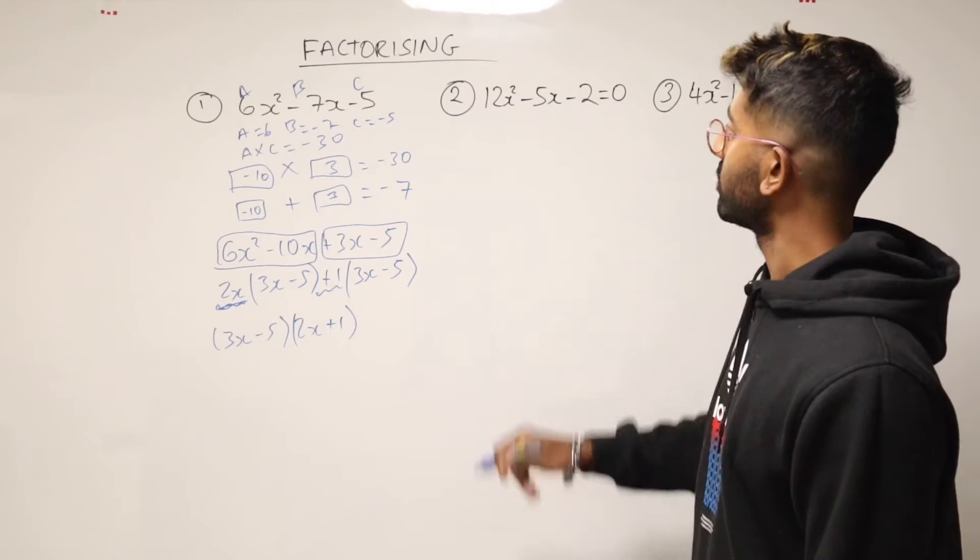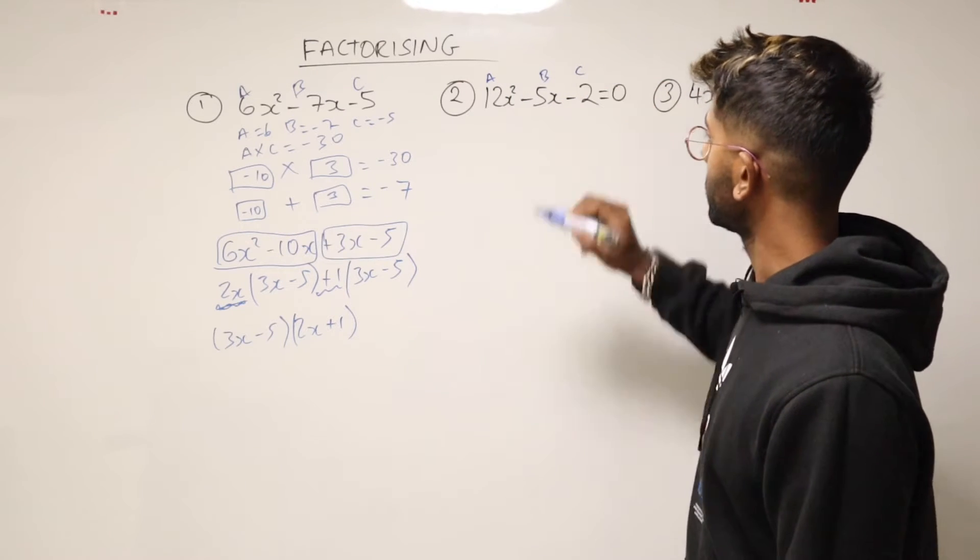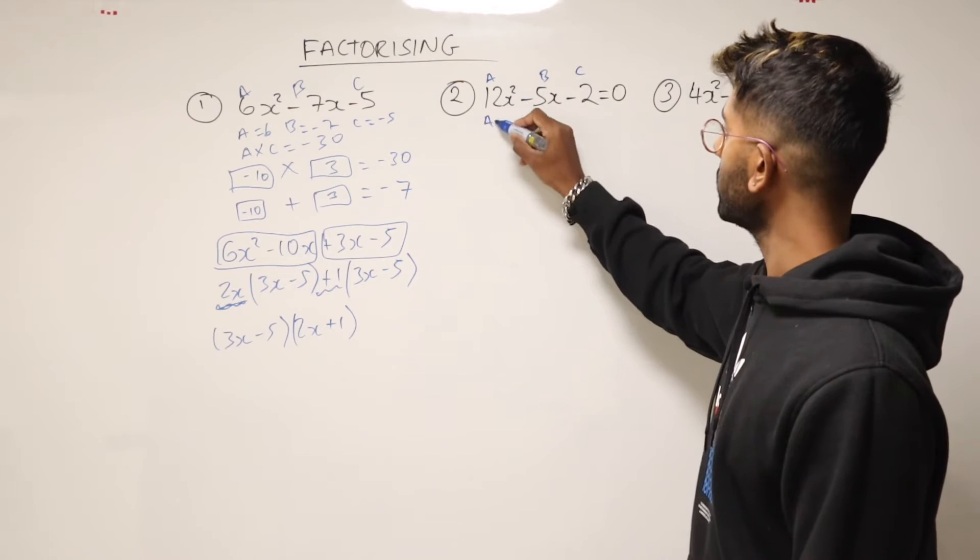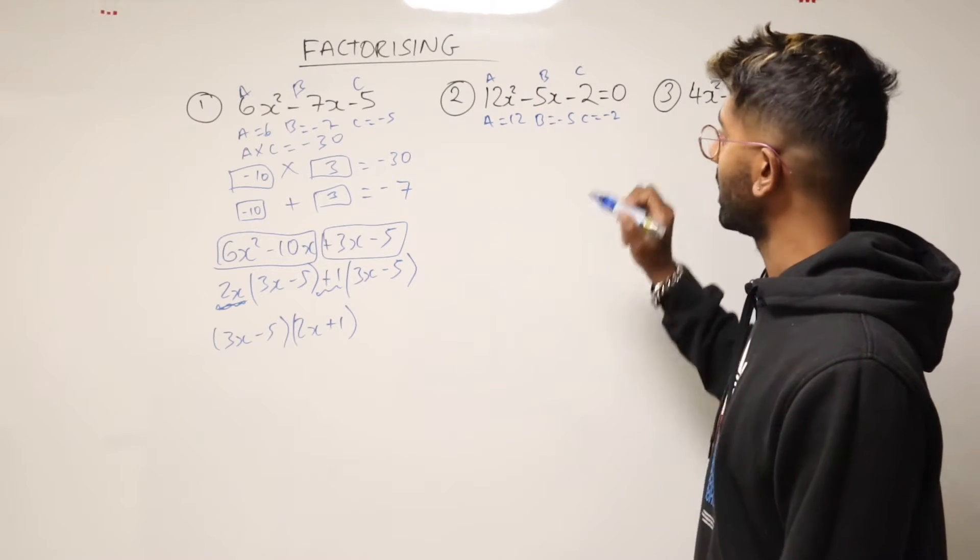We do exactly the same thing for this one. So we start by writing a, b, and c. So for this one, a is equal to 12, b is equal to minus 5, c is equal to minus 2.